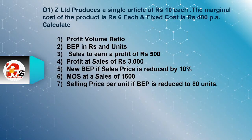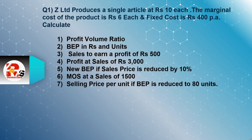Question number 1 which we are going to solve today: Red Limited produces a single article at rupees 10 each. The marginal cost of the product is rupees 6 each and fixed cost is rupees 400 per annum. We need to calculate: PVR (profit volume ratio), BEP in rupees and units, sales to earn a profit of rupees 500, profit at sales of rupees 3000, new BEP if sales price is reduced by 10%, margin of safety at a sale of 1500, and selling price per unit if BEP is reduced to 80 units — this point number 7 is very important.